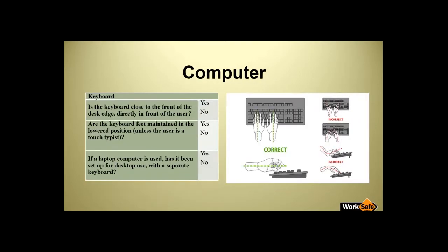Now looking at the keyboard. Is the keyboard close to the front of the desk, directly in front of the user? Are the keyboard feet lowered unless the person is a touch typist? And if using a laptop, as with the screen, you need a separate keyboard. The picture on the right shows what we're looking for in correct posture for the hands, wrists, and arms — green is correct and red is wrong. It's amazing how many times I see people trying to sit and type in a twisted position and they just don't realize that's the cause of their sore arms and wrists.